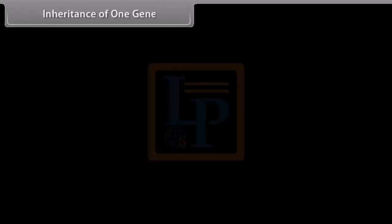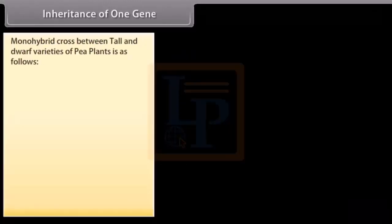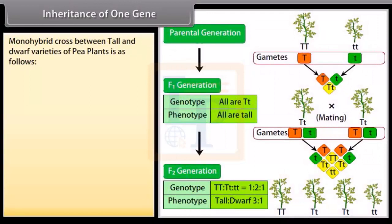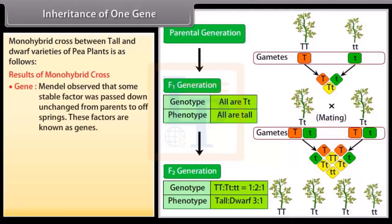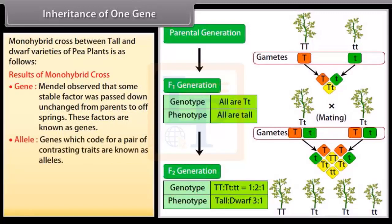Inheritance of one gene. Inheritance of one gene: monohybrid cross between tall and dwarf varieties of pea plants is as follows. Results of monohybrid cross: gene. Mendel observed that some stable factor was passed down unchanged from parents to offsprings. These factors are known as genes. Alleles: genes which code for a pair of contrasting traits are known as alleles.